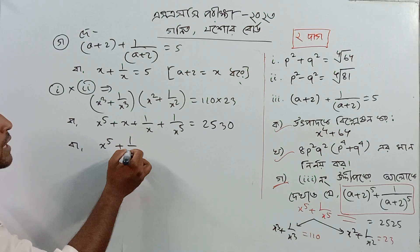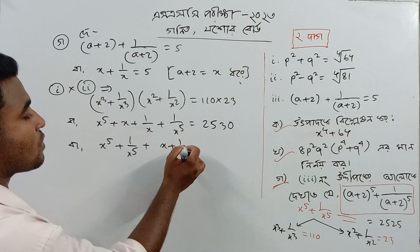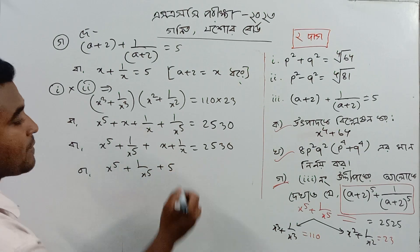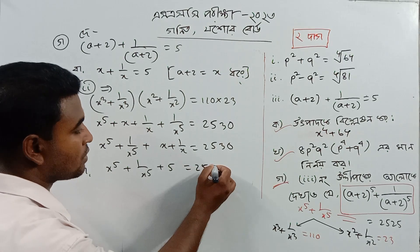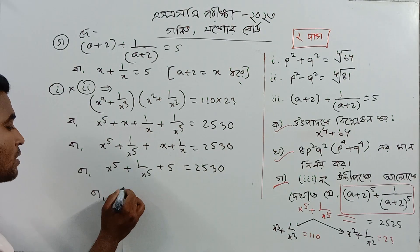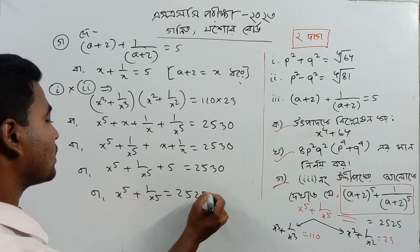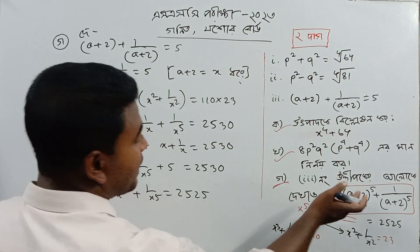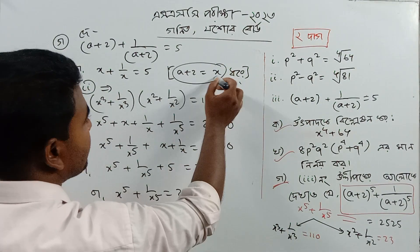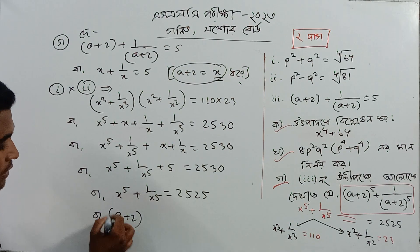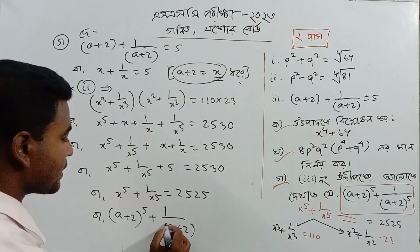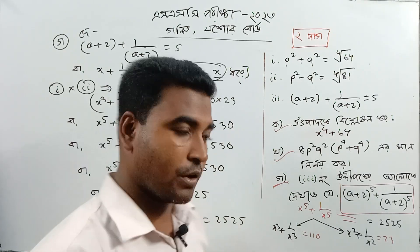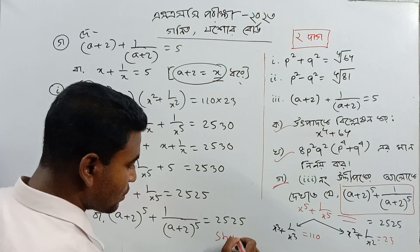But x5 plus 1 by x5, we go x plus 1 by x. That is a number — five equals a, last time minus five. So, a plus 2 to the power 5 plus 1 by a plus 2 to the power 5 is equal to our second result, which means we are using A.T.I.